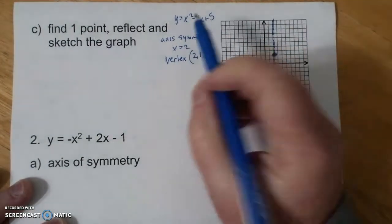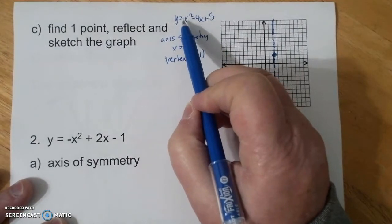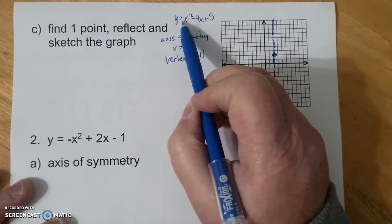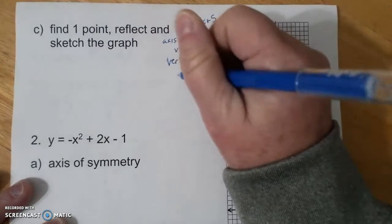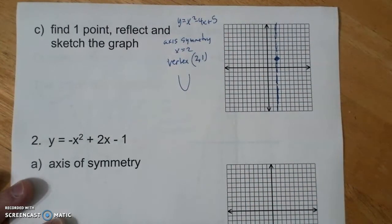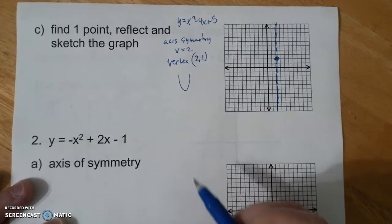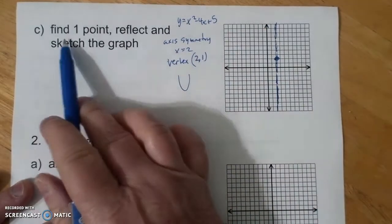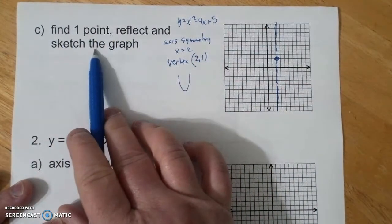I also know that because the leading coefficient of the x squared is positive, I know that it's going to be a maximum. So the next thing I'm going to do is I need to find one point, reflect it, and sketch the graph.